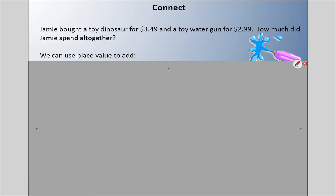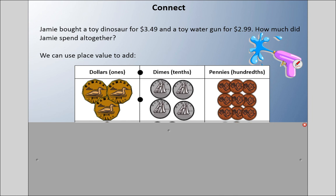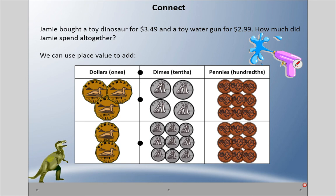Let's say Jamie bought a toy dinosaur for three dollars and 49 cents and a toy water gun for two dollars and 99 cents. How much did Jamie spend all together? We can use something called a place value chart. Here I have three dollars and 48 cents—I've divided it all up into their places. Remember, dimes are tenths and pennies are hundredths. We're going to go with that. Then we have the two dollars and 99 cents. So what I'm going to be doing here is—I know I have nine pennies in this top box, and I'm going to circle an extra one to make a 10, and that would make an extra dime.